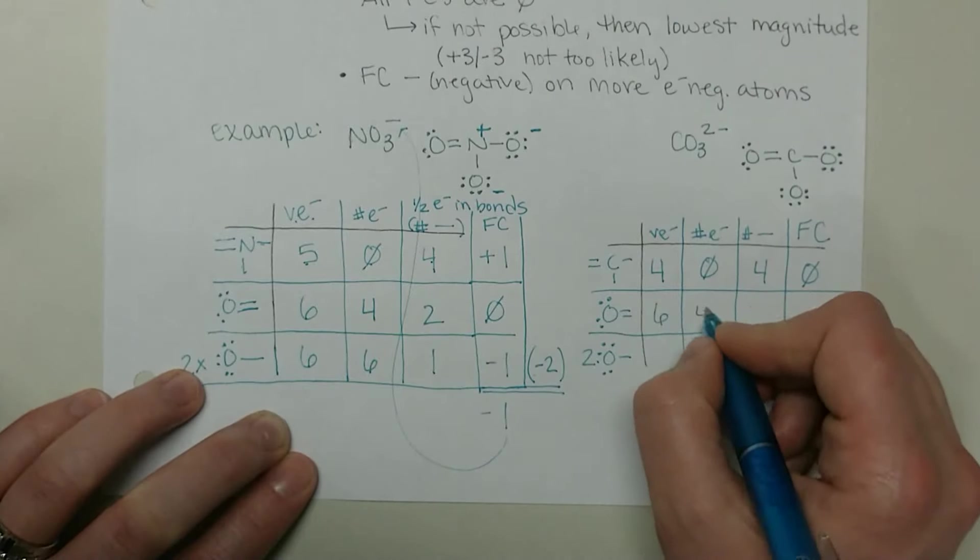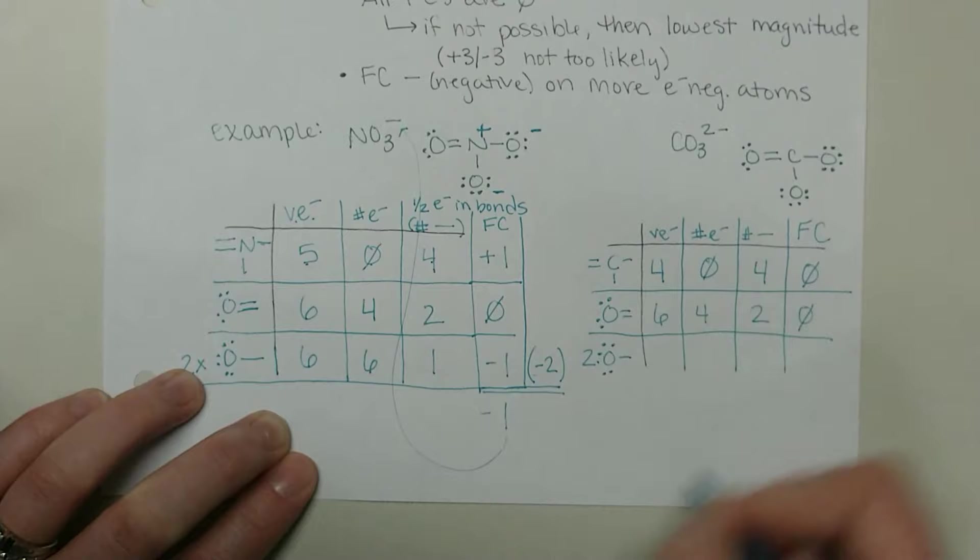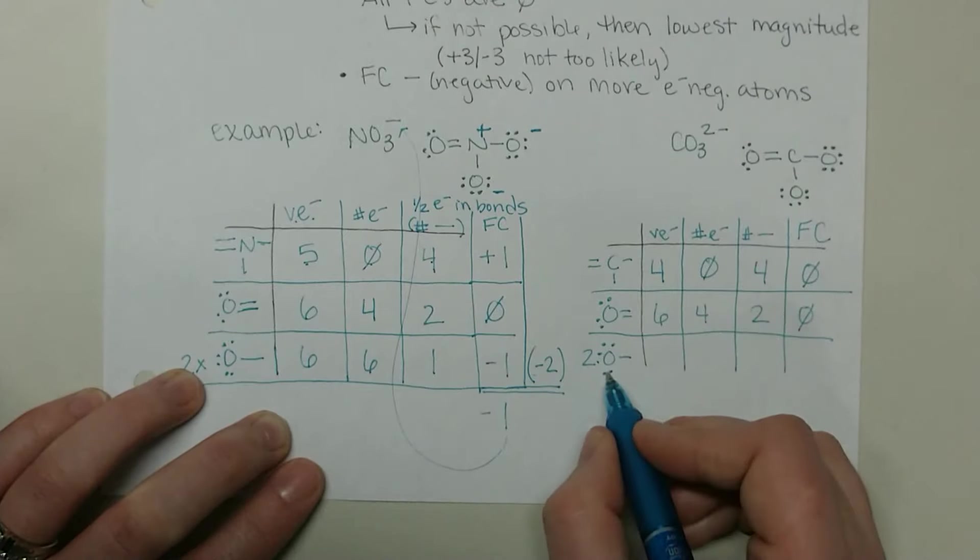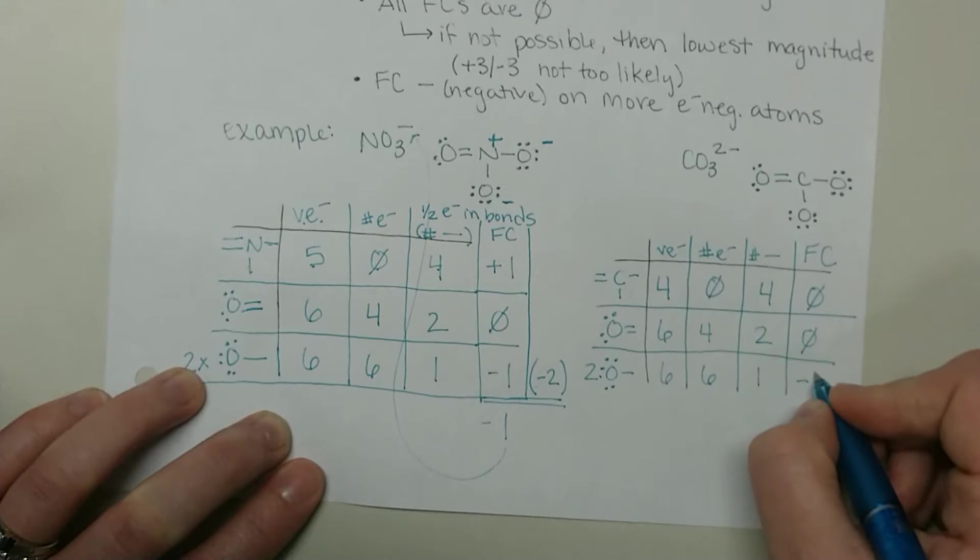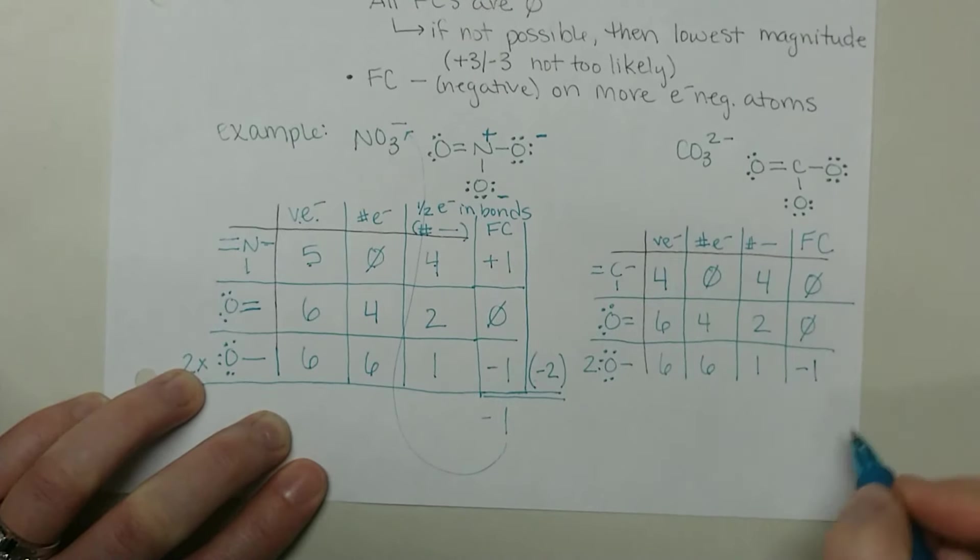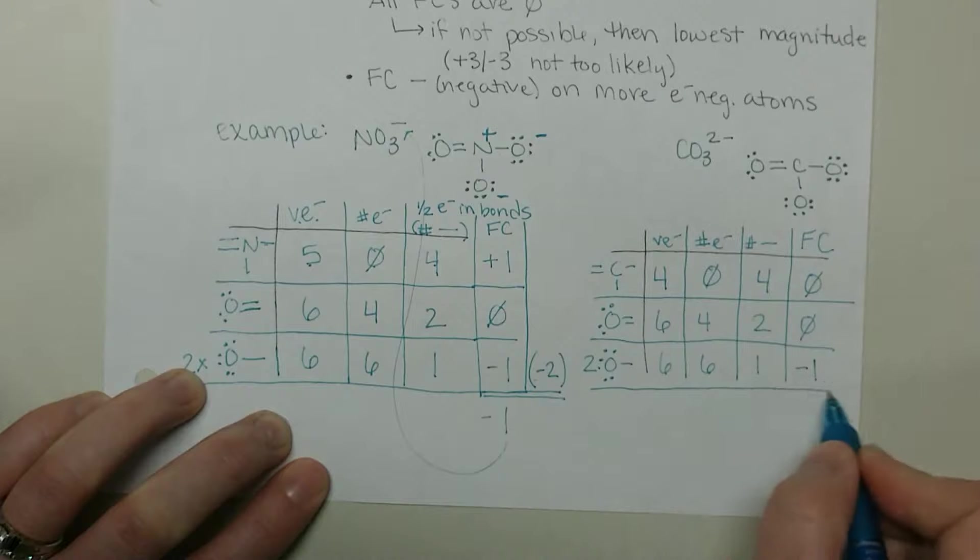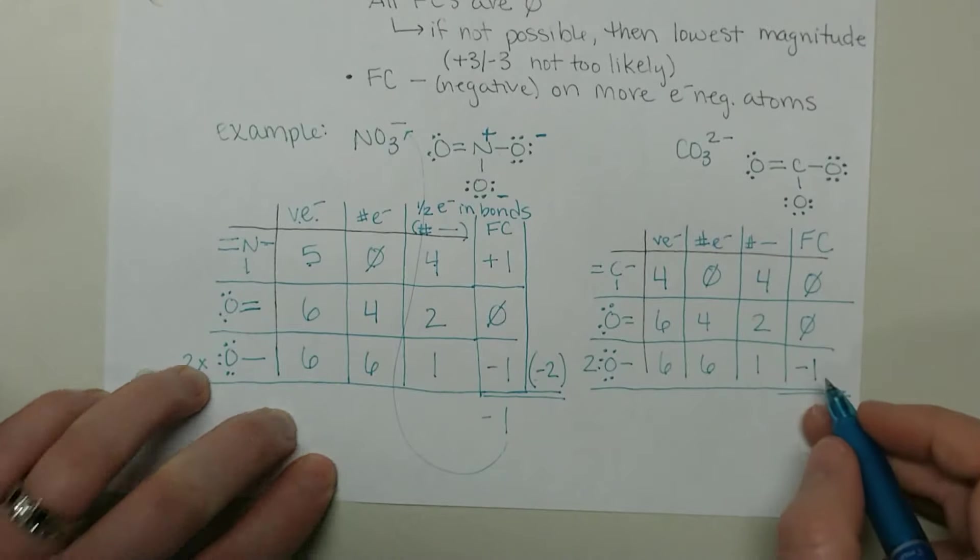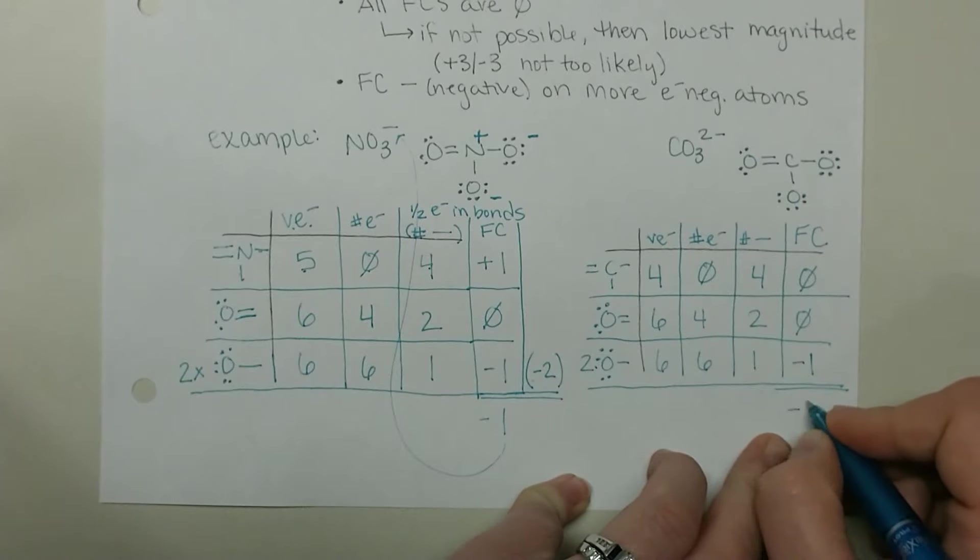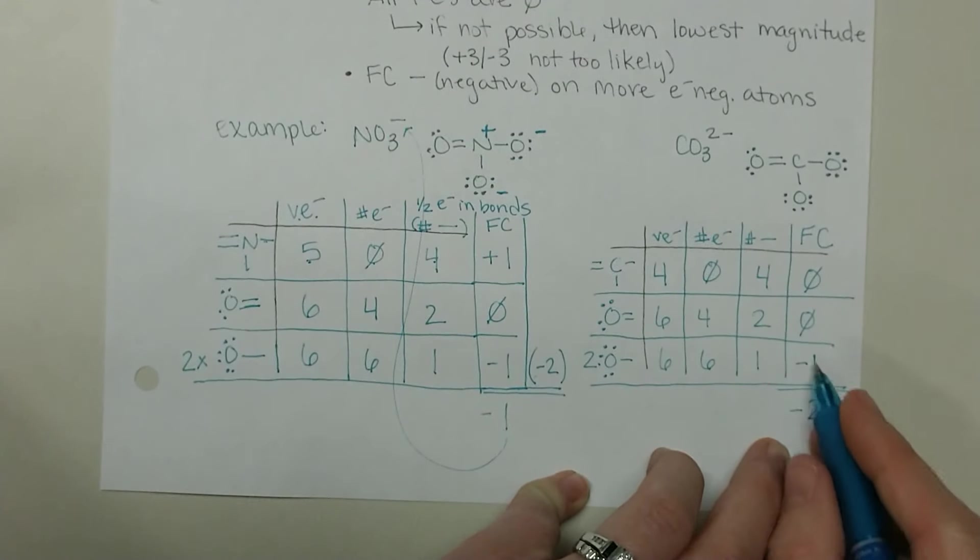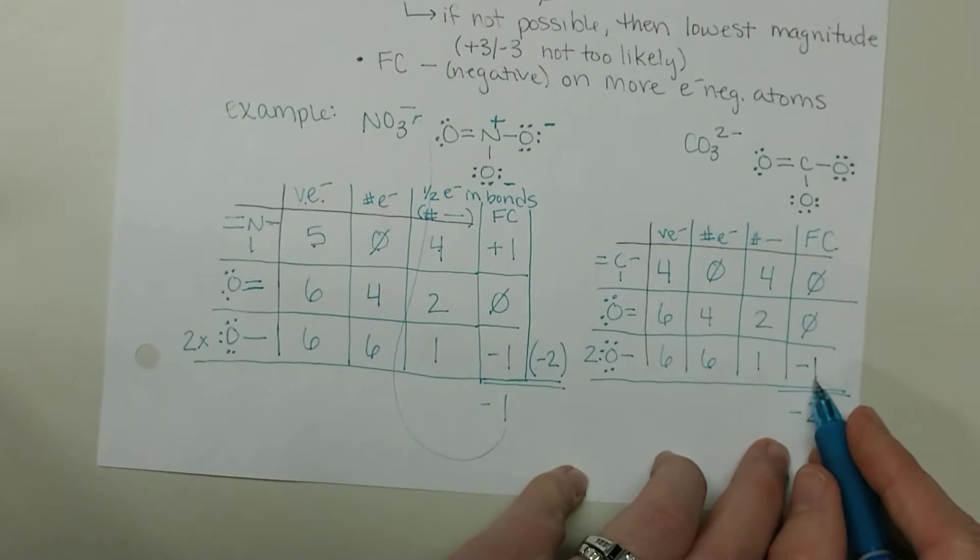Carbon has four bonds for a formal charge of zero. Our double bonded oxygen has a formal charge of zero. And our single bound oxygen has a formal charge of negative one. So our overall formal charge here is negative two because we have two oxygens that have a negative one formal charge.